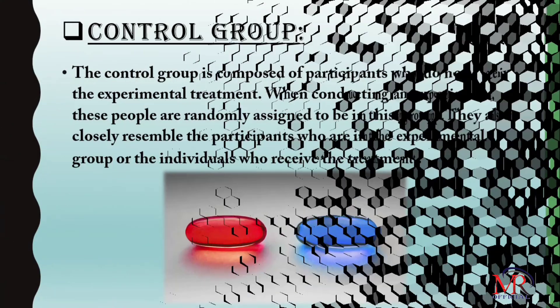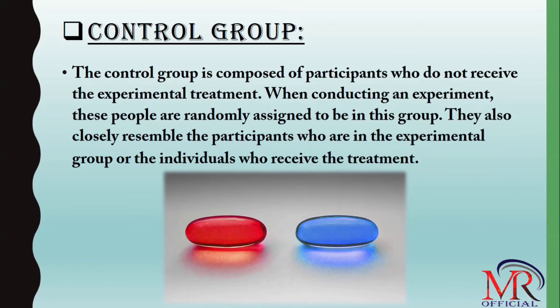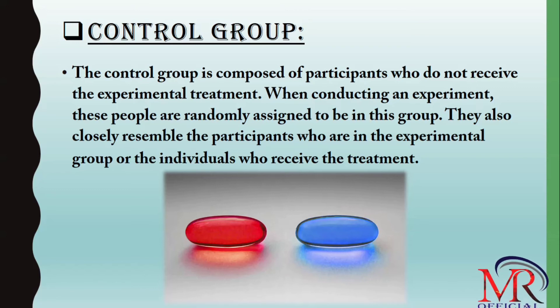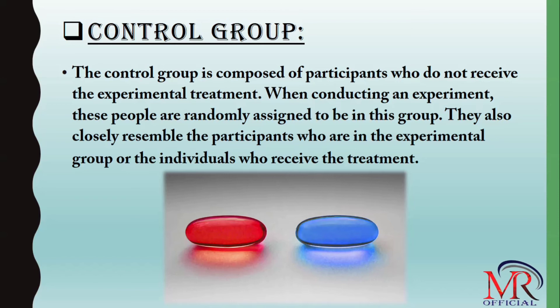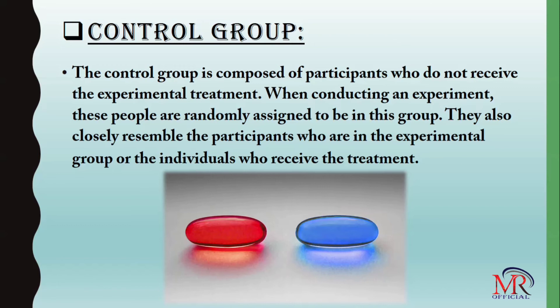Now we have two groups in an experiment. When we conduct an experiment, we have two groups: one is a control group and one is an experimental group. The control group is composed of participants who do not receive the experimental treatment. When conducting an experiment, these people are randomly assigned to be in this group. They also closely resemble the participants who are in the experimental group — the individual who receives the treatment.